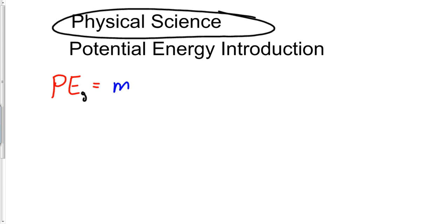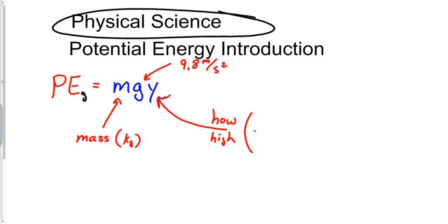I usually write PE equals M-G-Y. If you want to find potential energy due to something being in the air, you need to make sure that your mass is in kilograms. G is the same G it's always been, 9.8 meters per second squared. And Y is literally just how high. That's all we're looking at, and it should be measured in meters.